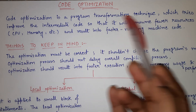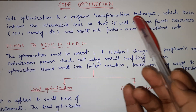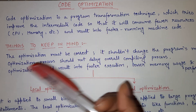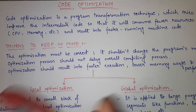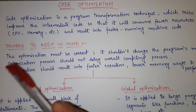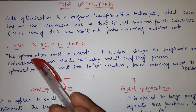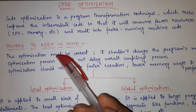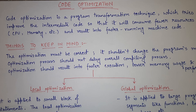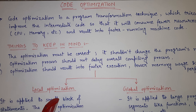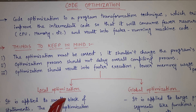This is the aim behind optimizing the code. Now, what are the things to keep in mind while doing code optimization? There are certain things you should keep in mind — three main things.